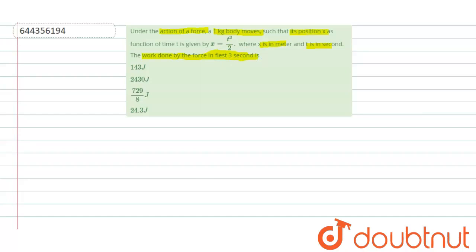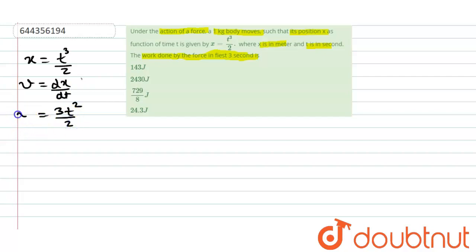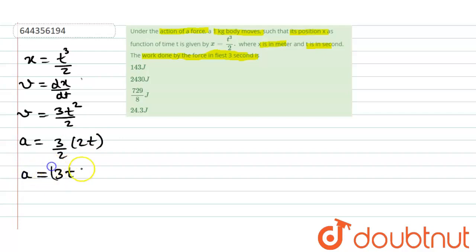Let's find out. We know position varies as t³/2. First we have to find velocity. It will be dx/dt, which is equal to 3t²/2. And acceleration will become (3/2) × 2t, which is equal to 3t meters per second squared. And speed is in meters per second.